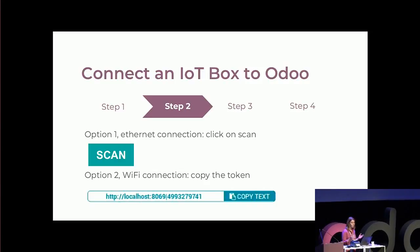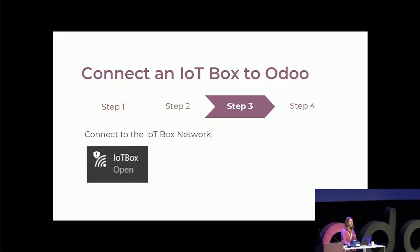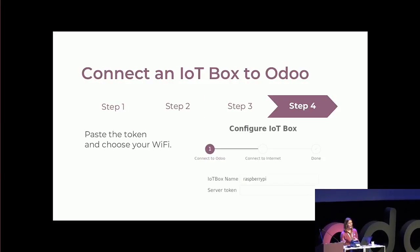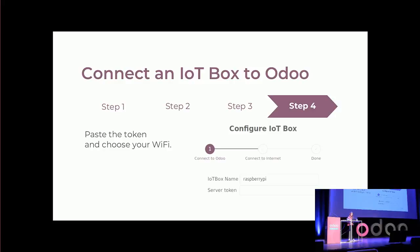If using Wi-Fi, it's not complicated either. I receive a token from Odoo that I copy. Then I see in my available networks one called IoT box, connect to that network, and get redirected to the IoT box home page where I paste the token. I can also choose the Wi-Fi network I want to connect with and enter the password if there is one. And that's it — my box is already connected to my database.